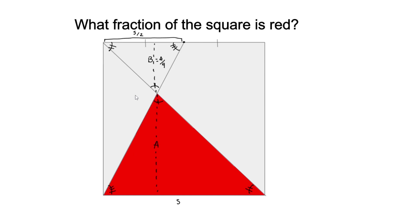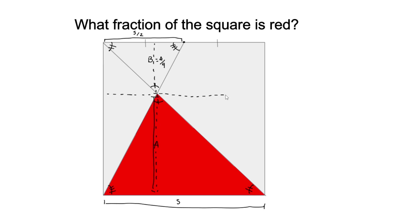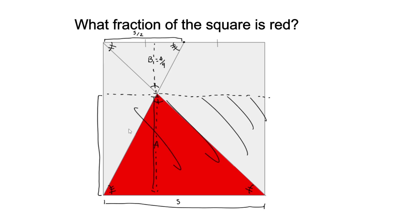So, if we recall, how do we find the area of a triangle? We take its base and multiply it by its height, and then divide by two. If we took its base and multiplied by its height, we would get the area of this rectangle here, and the area of that rectangle would be 2A. So all of that right here would be 2A.